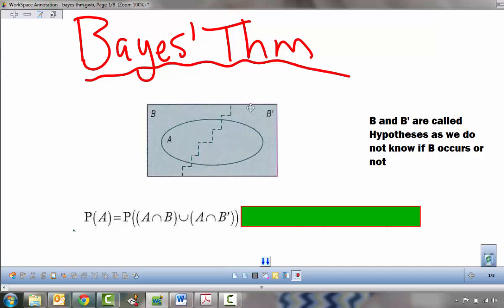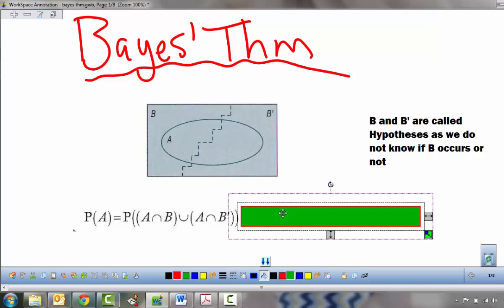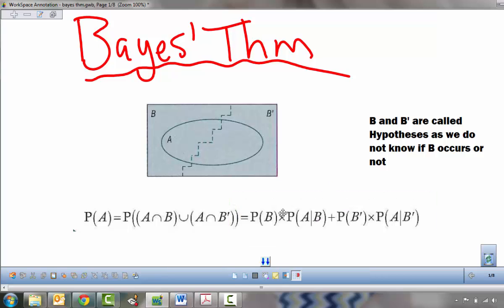union with A intersect not B. And we can rewrite that as the probability of B times the probability of A given B, plus the probability of not B times the probability that A occurs given that B doesn't. So this is our total probability formula. It gives us the total probability of A happening, taking into consideration that B might happen or it might not happen.